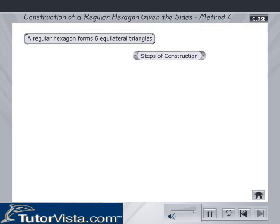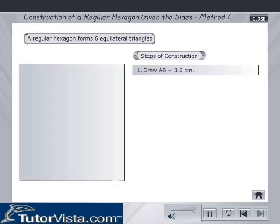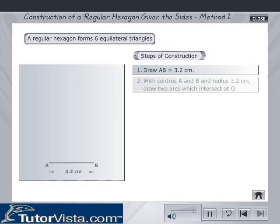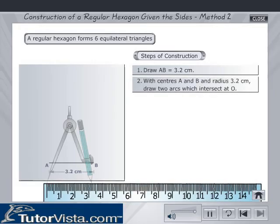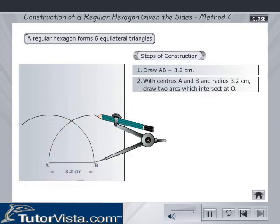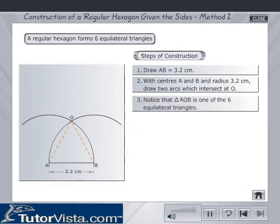Draw AB is equal to 3.2 cm. With centers A and B and radius 3.2 cm, draw two arcs which intersect at O. Notice that triangle AOB is one of the six equilateral triangles.